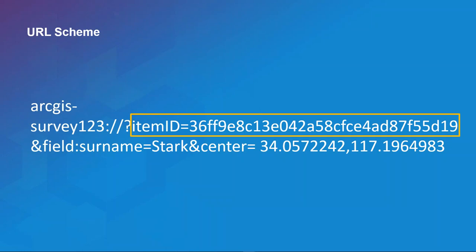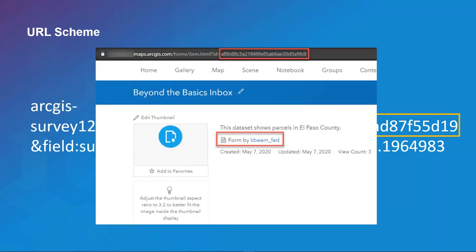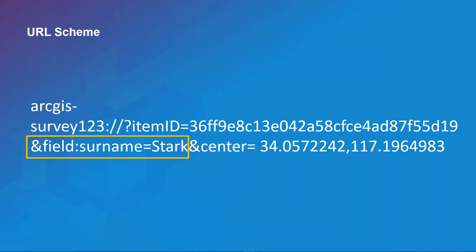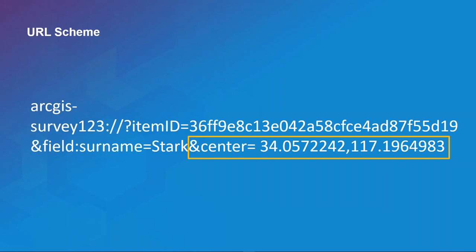It's important that you do not use the item ID from the hosted feature layer — reference the form item ID, which you can get from the item details on your enterprise portal or ArcGIS Online. We'll use an ampersand to pass another parameter called 'field,' followed by the name of the field from Survey123 and the value you'd like to pass. In this case we're passing the value 'start' to the Survey123 field called 'surname,' and finally using the 'center' parameter to center the map on a particular set of coordinates.